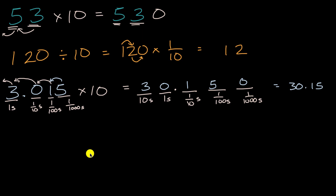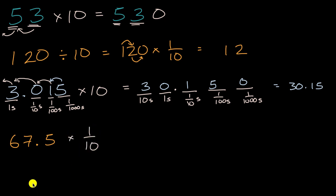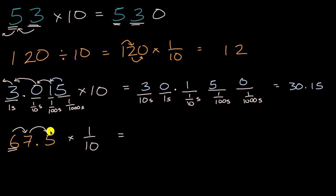And so we could think about the other way around. What if I were to take 67.5 and divide it by 10 — or another way of thinking about it, multiply this by one tenth? Pause the video and see if you can figure out what that's going to be. Well, every digit is going to shift one place to the right. So the six is going to be in the ones place, the seven is going to go into the tenths place, and the five is going to go into the hundredths place.